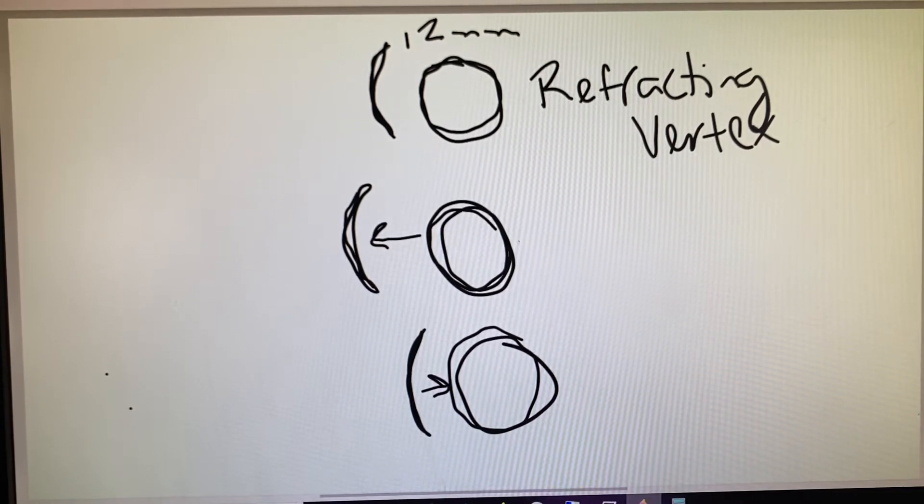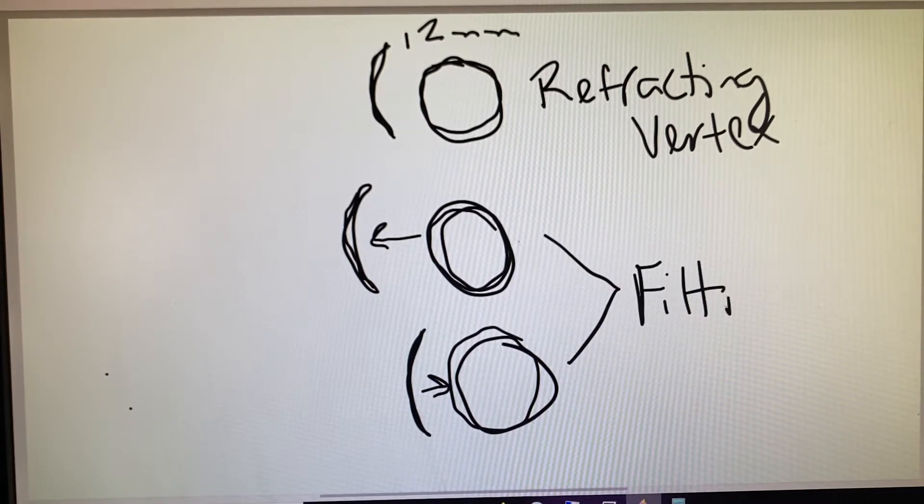It could potentially be further away from the patient or potentially sit closer to the patient than the phoropter did during the exam. And we would call either of these the fitting vertex, or where do the glasses fit on the patient.